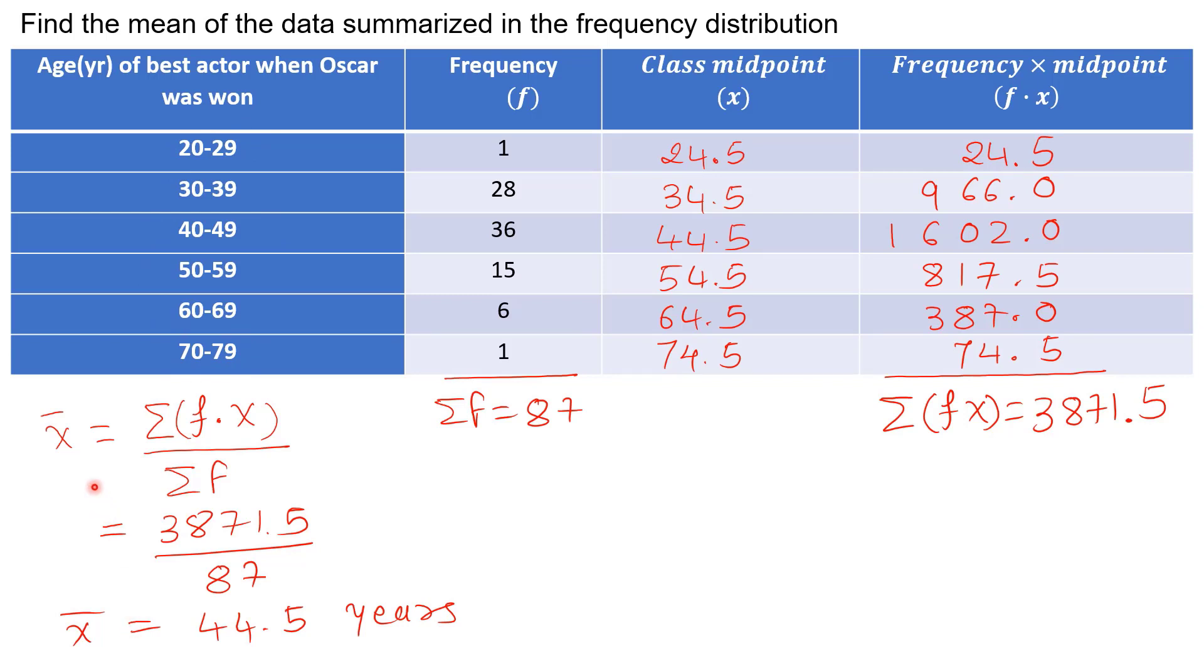So the mean of 44.5 years of age found by using all of the original years of age is a more accurate result. So we get x bar equals 44.5 years as an approximation. Hope this will help you.